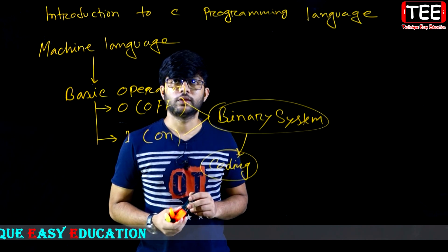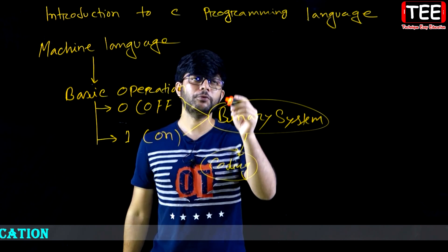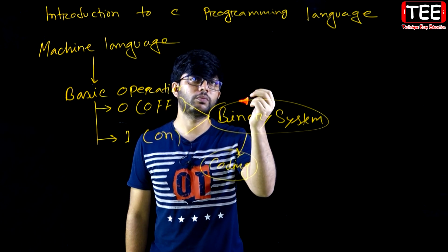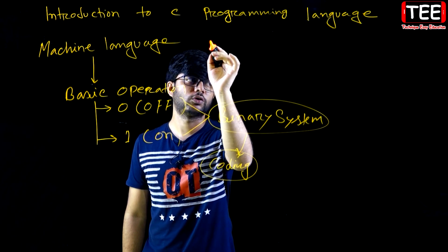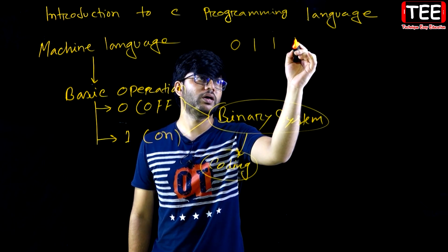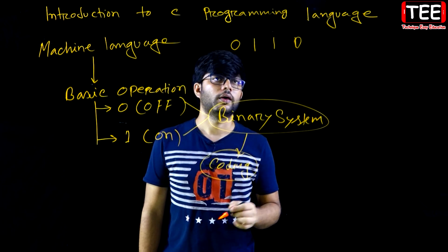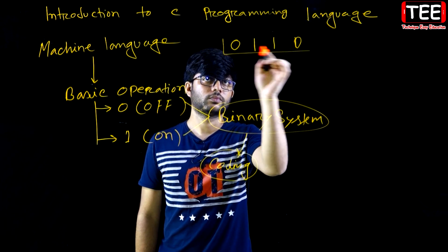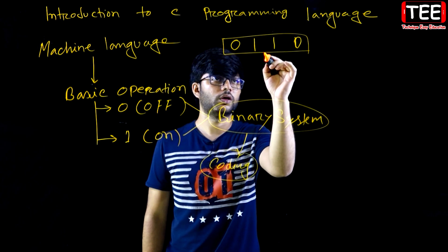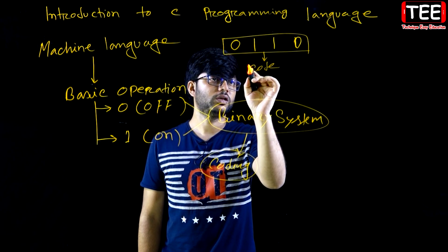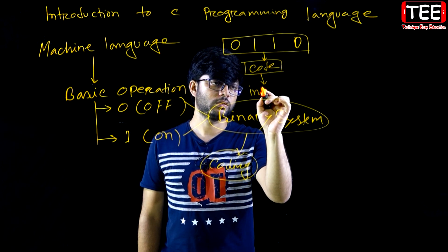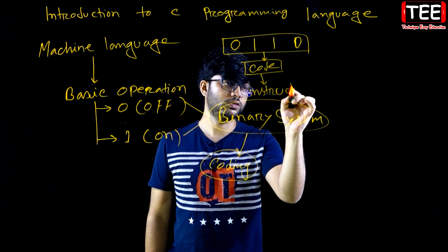For example, machine technology instruction: 0, 1, 1, 1, 0 — it is a machine language code. Machine language code — instruction, instruction.